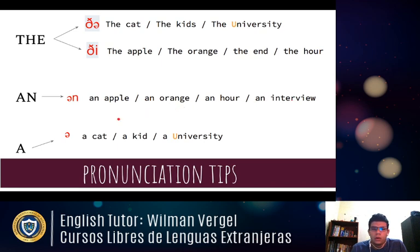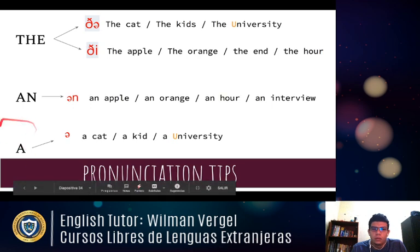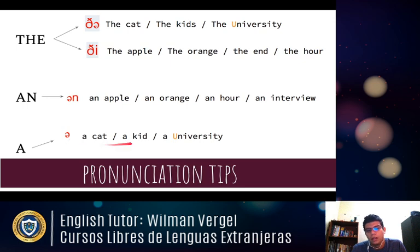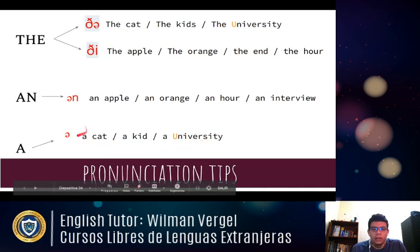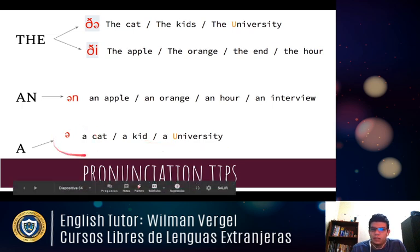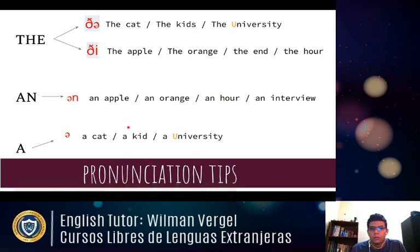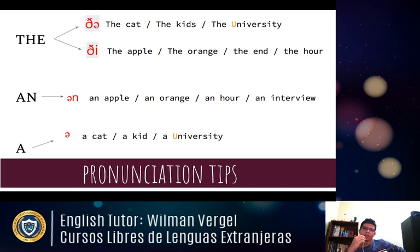For the article 'a,' this word can be pronounced in two ways: with the schwa — 'a cat,' 'a kid,' 'a university' — or with the longer sound: 'ay cat,' 'ay kid.' Most people use the schwa pronunciation: 'I have a cat,' 'I registered at a university.' And that was what I wanted to tell you about the first grammar part of unit number seven.